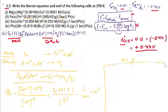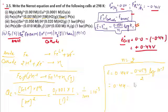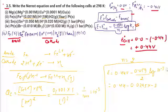Applying the Nernst equation: E = 0.44 − (0.0591/2) × log(10⁻³). Since log(10⁻³) = −3, this gives E = 0.44 − 0.02955 × (−3) = 0.44 + 0.08865 = 0.5285 V, which we can write as approximately 0.53 V.